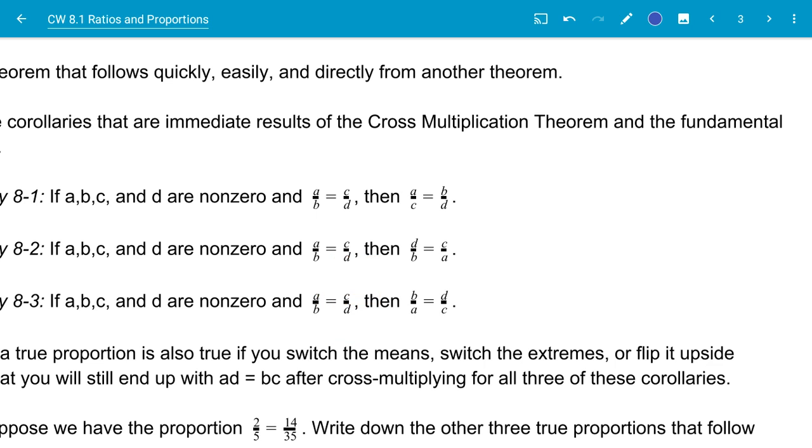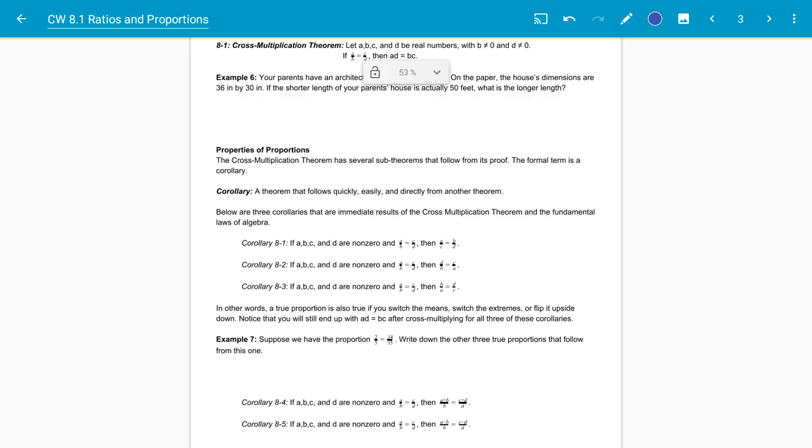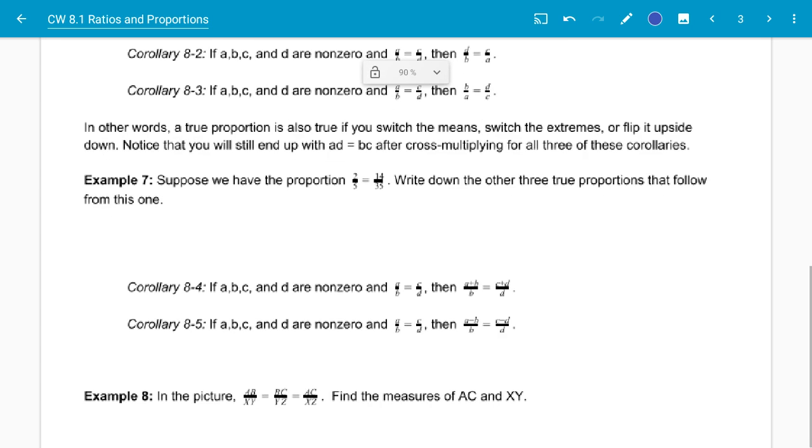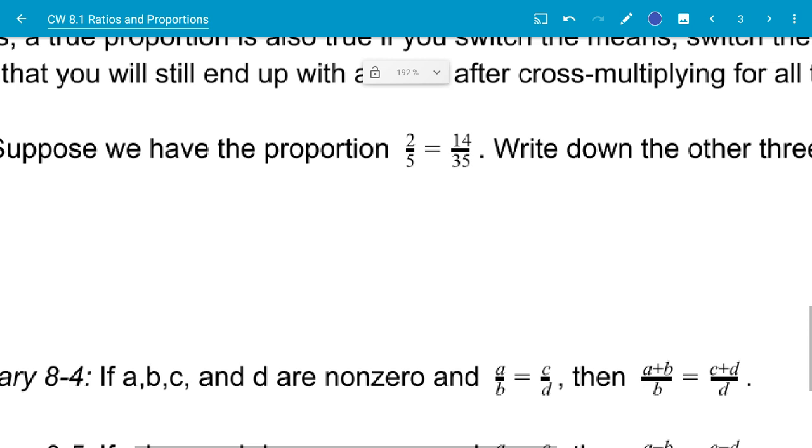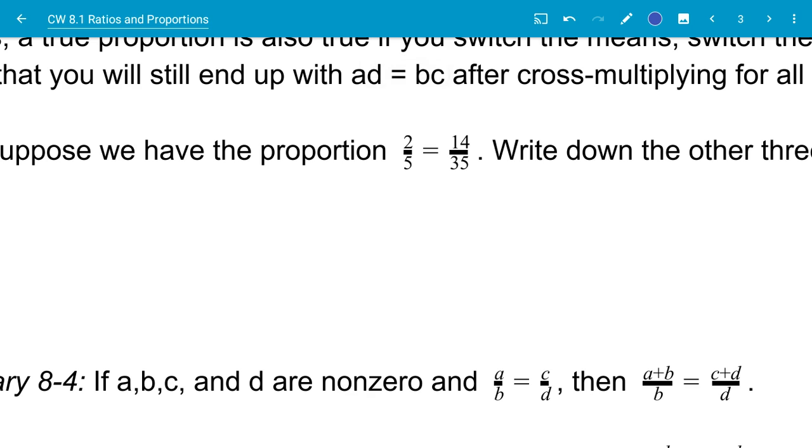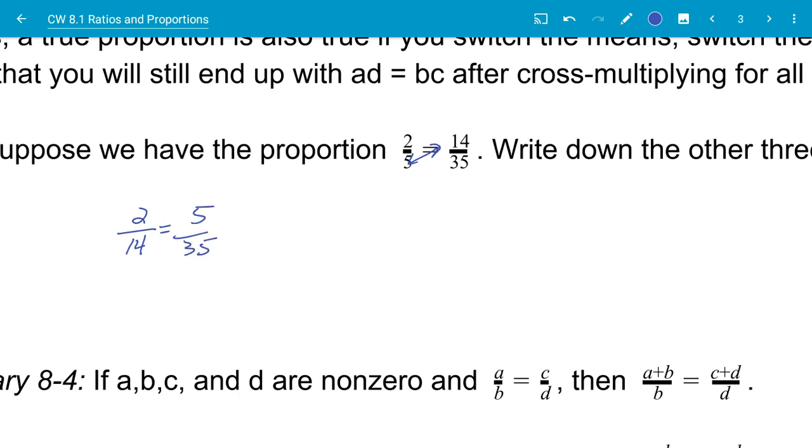So just some things to remember on means and extremes. So let's take a look at example number seven. It says suppose we have the proportion 2 over 5 is equal to 14 over 35. It says write down the other three true proportions that follow this one. So the first one I'm going to do is I'm going to go ahead and I'm going to switch my means. So I'm going to say 2 over 14 is equal to 5 over 35.